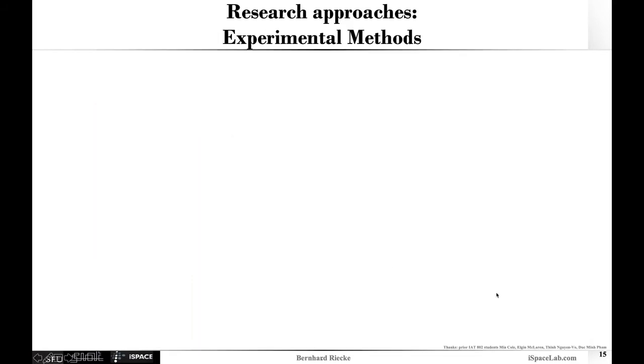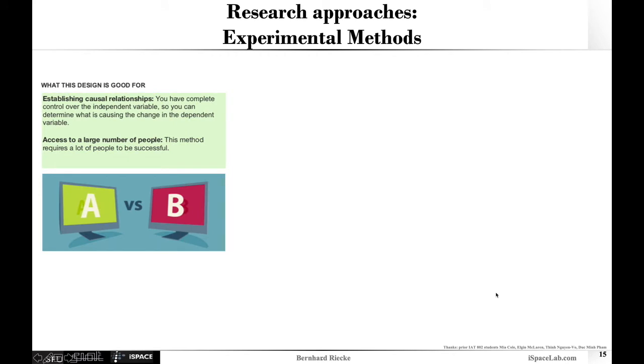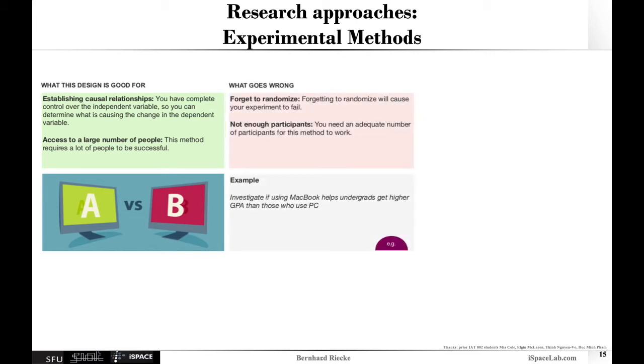I'd like to start with discussing experimental approaches. What are they good for? Basically, if you want to establish a causal relationship, you have to use experimental methods. That's feasible if you have a large enough number of participants. You have control over the independent variable. You can do randomized controlled assignments of participants to different conditions. What could go wrong is it's really hard when you don't have enough participants or power, especially for between-subjects design. Or something went wrong with randomization.